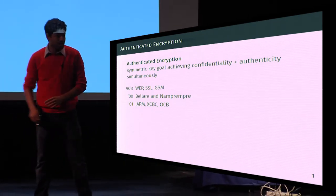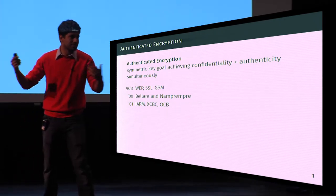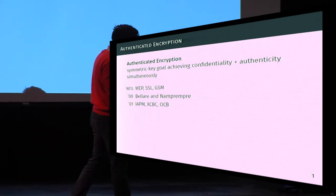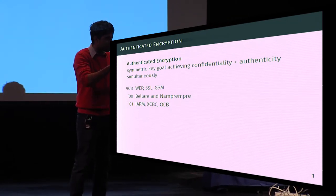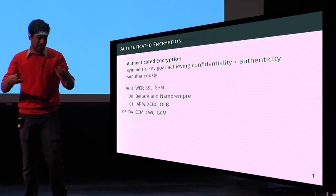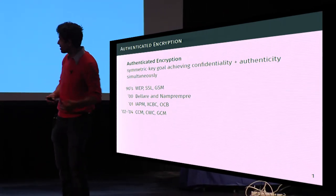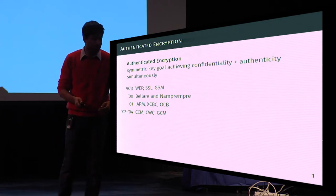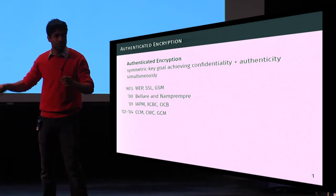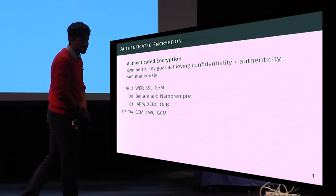Three examples are IPM, XCBC, and OCB. However, these algorithms came with patents, which made standards organizations like NIST uncomfortable. When they looked for new modes of operation, they turned toward a second wave of dedicated authenticated encryption algorithms, which were patent-free.